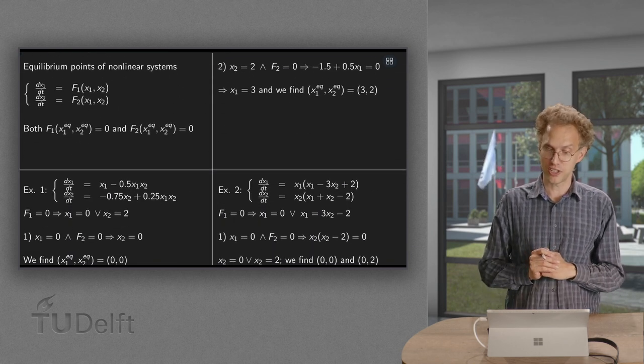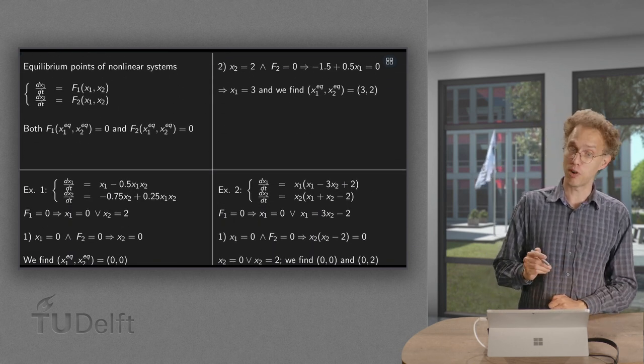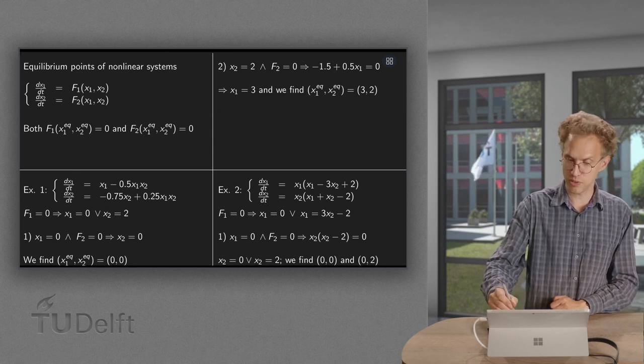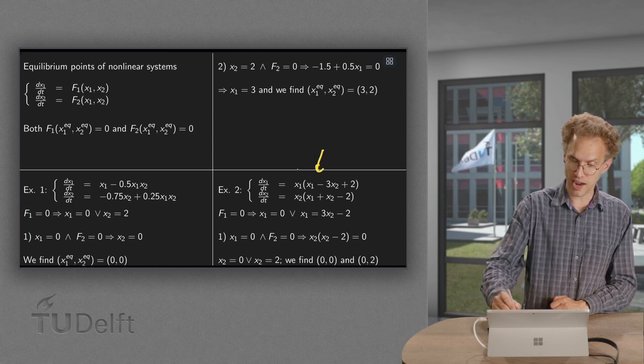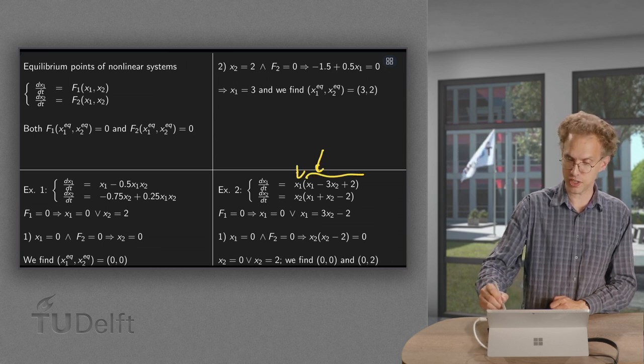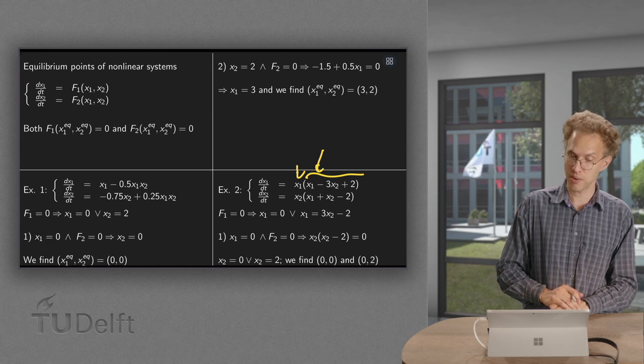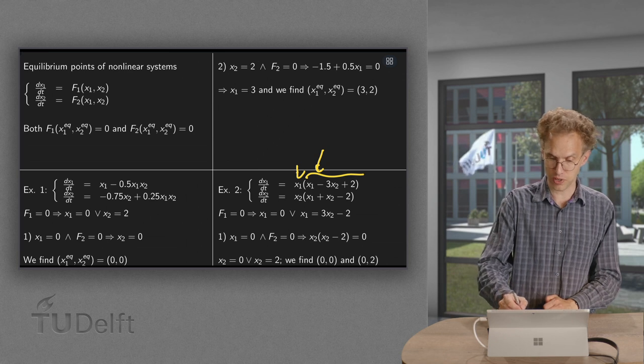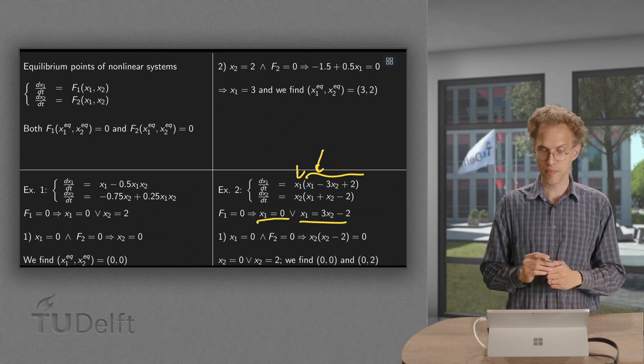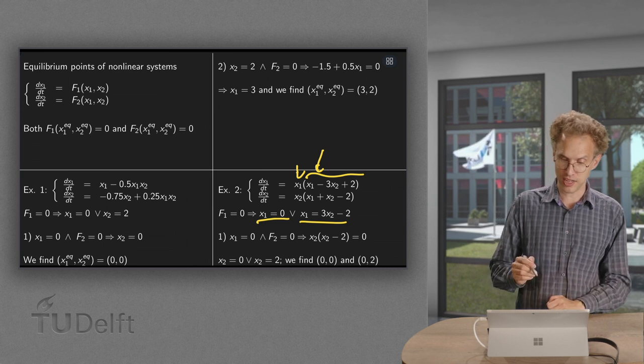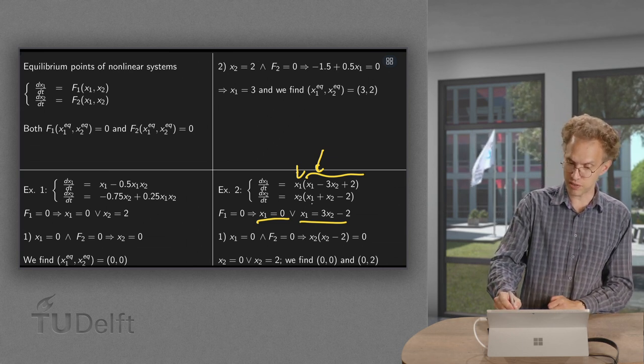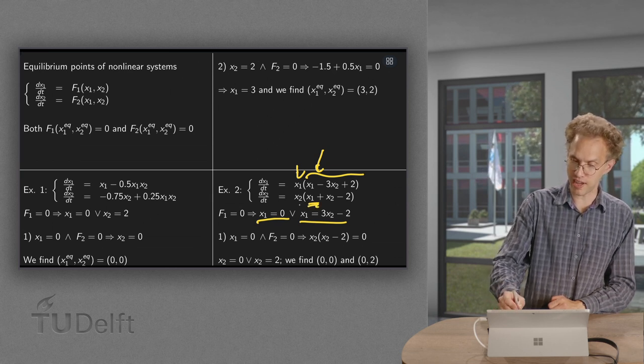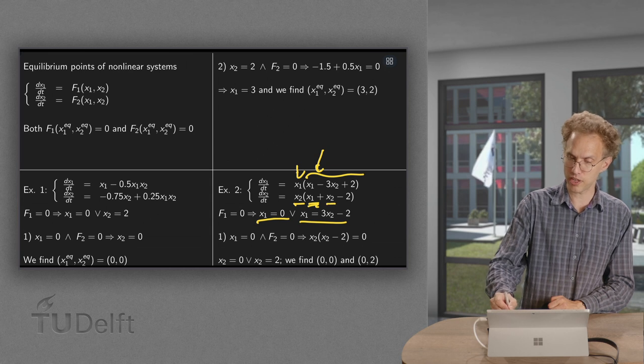Then let's take a look at a second example, which is a bit more complicated. Again, first we set f1 to zero. Then we can have either x1 equals zero or this expression over here can be equal to zero. So either x1 is zero or x1 equals 3x2 minus 2. So those are the two options we have. Well, let's start with x1 equals zero. Well, if x1 equals zero and f2 also zero,